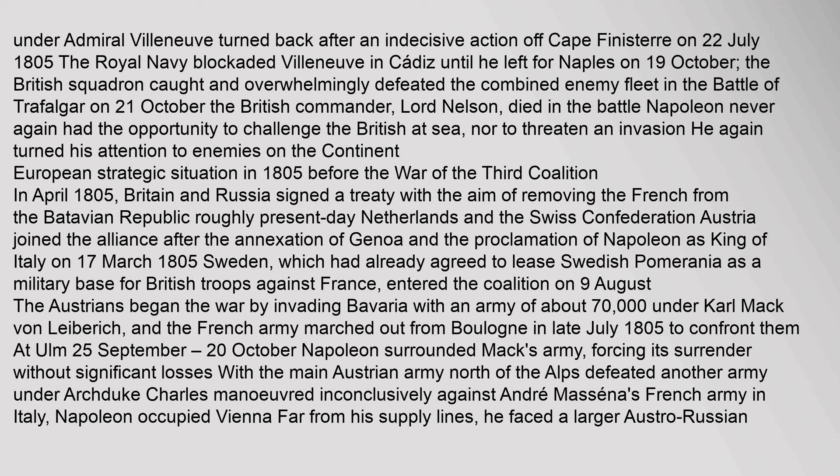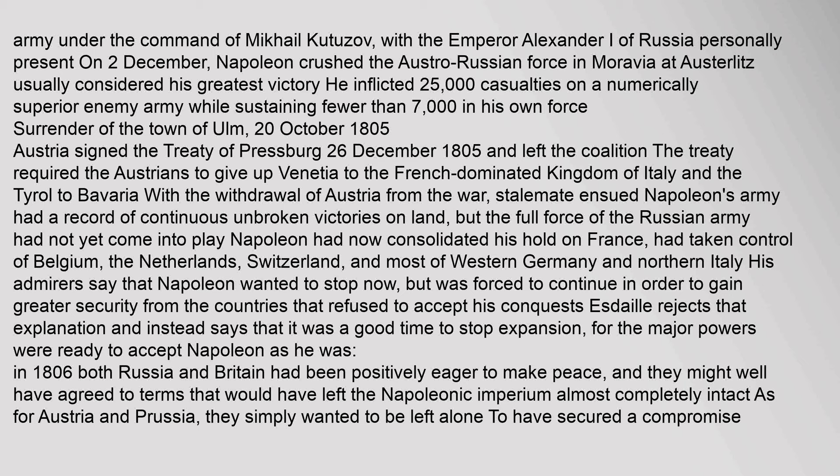In April 1805, Britain and Russia signed a treaty with the aim of removing the French from the Batavian Republic and the Swiss Confederation. Austria joined the alliance after the annexation of Genoa and Napoleon's proclamation as King of Italy. The Austrians began the war by invading Bavaria with an army of about 70,000 under Karl Mack von Lieberich. On 2 December, Napoleon crushed the Austro-Russian force in Moravia at Austerlitz — usually considered his greatest victory — inflicting 25,000 casualties on a numerically superior enemy army while sustaining fewer than 7,000 in his own force.